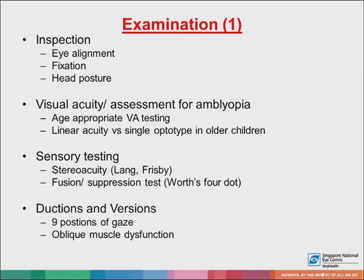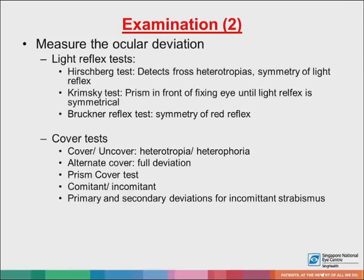Ductions and versions are important in nine positions of gaze. Look for any presence of oblique muscle dysfunction that can be commonly associated with some types of strabismus. To measure the ocular deviation, it's critical that the patient is fixing during this assessment. Light reflex tests are easiest to perform on younger children, though they are not as precise. In older or more cooperative children, the cover-uncover test is ideal — it will detect a tropia and a phoria respectively. The alternate cover test brings out the full deviation. Using a prism will help you quantify the amount of deviation, and you may measure the deviation in different gazes if you suspect an incomitant cause. If it is incomitant, you would need to measure both the primary and secondary deviations.